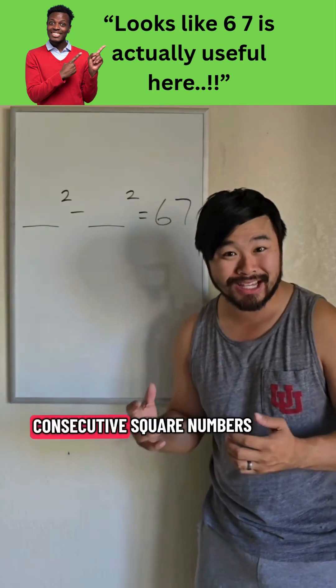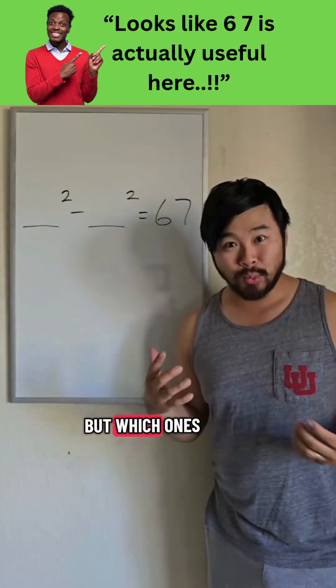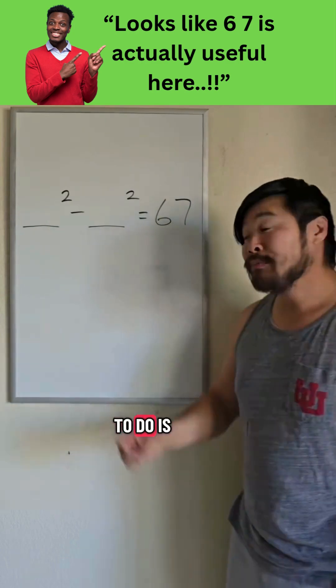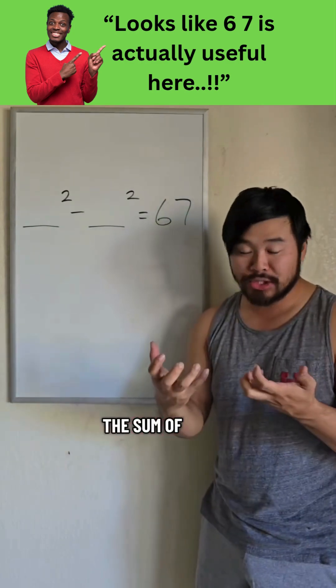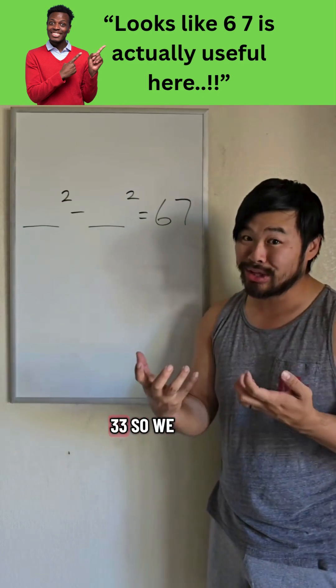67 is the difference of two consecutive square numbers. But which ones? Well, all we have to do is break 67 into the sum of two consecutive numbers. That's 34 and 33.